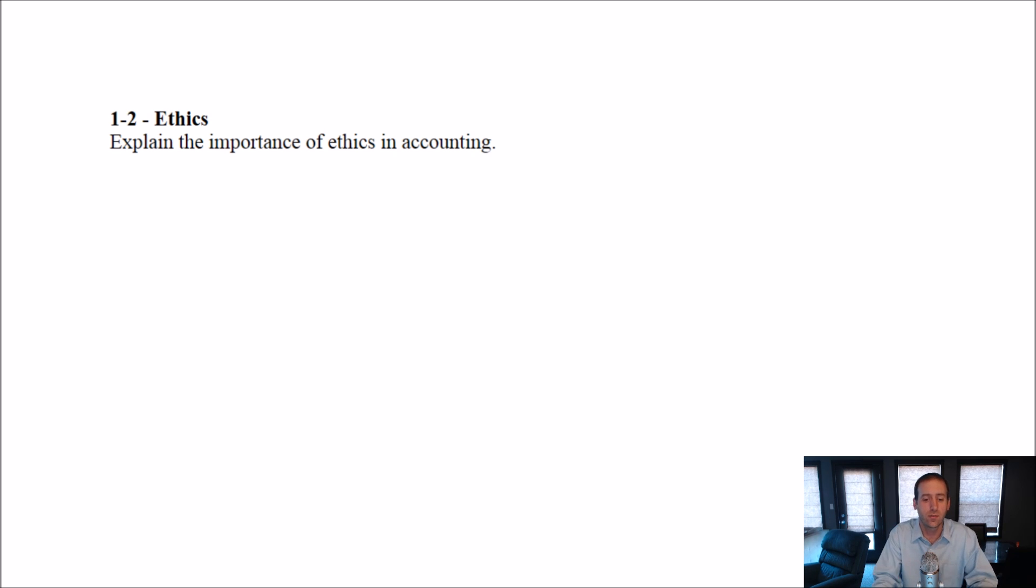There's this thing called the fraud triangle. And the fraud triangle looks like this. A triangle. Big surprise. So there's need, opportunity, and justification. And the idea here is that these three things need to be present for fraud to occur.